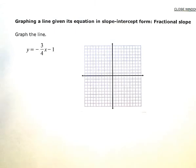Graphing a line given its equation in slope-intercept form, fractional slope. So my instructions say to graph the line. And here's my equation, y equals negative 3 fourths x minus 1.